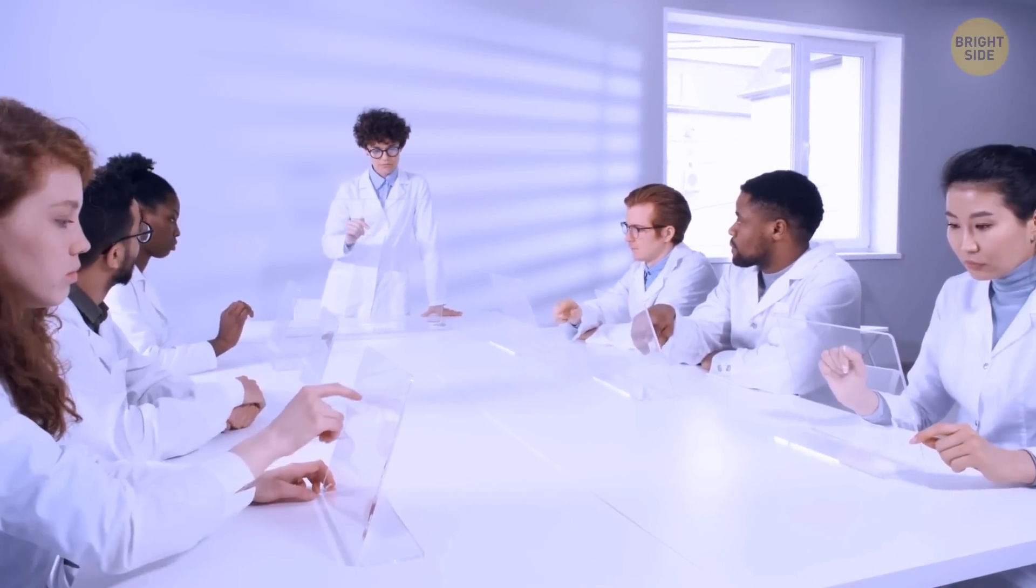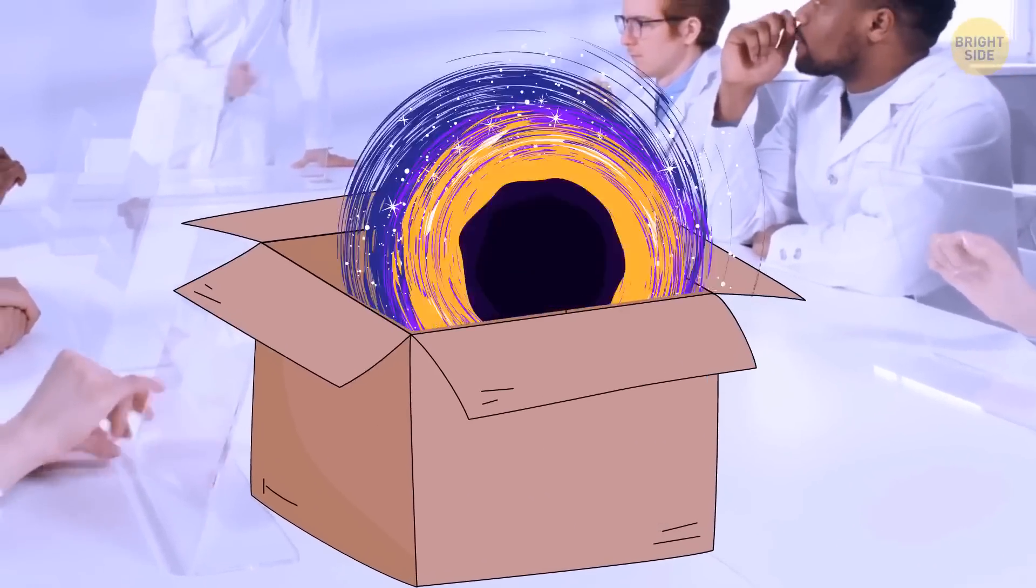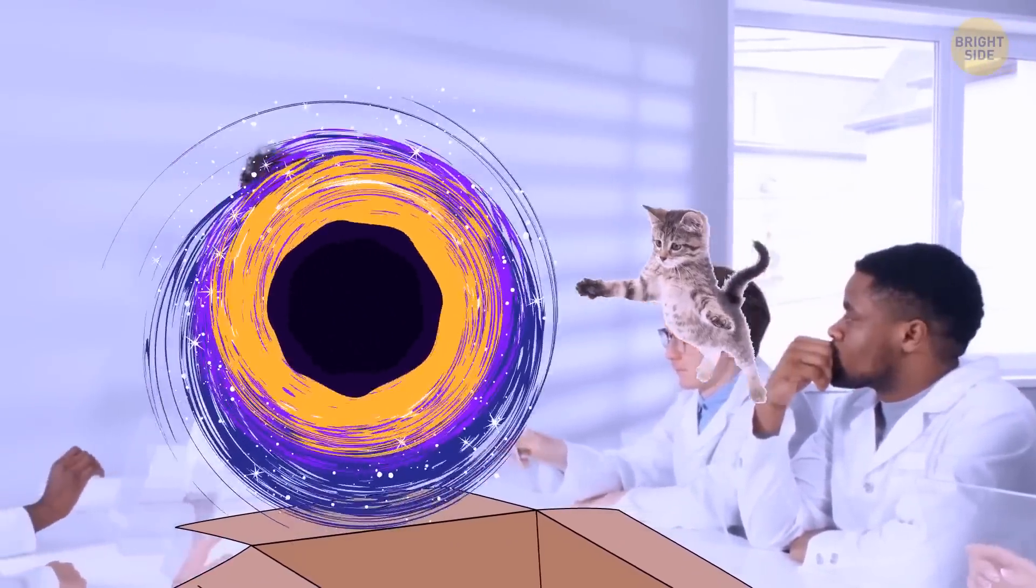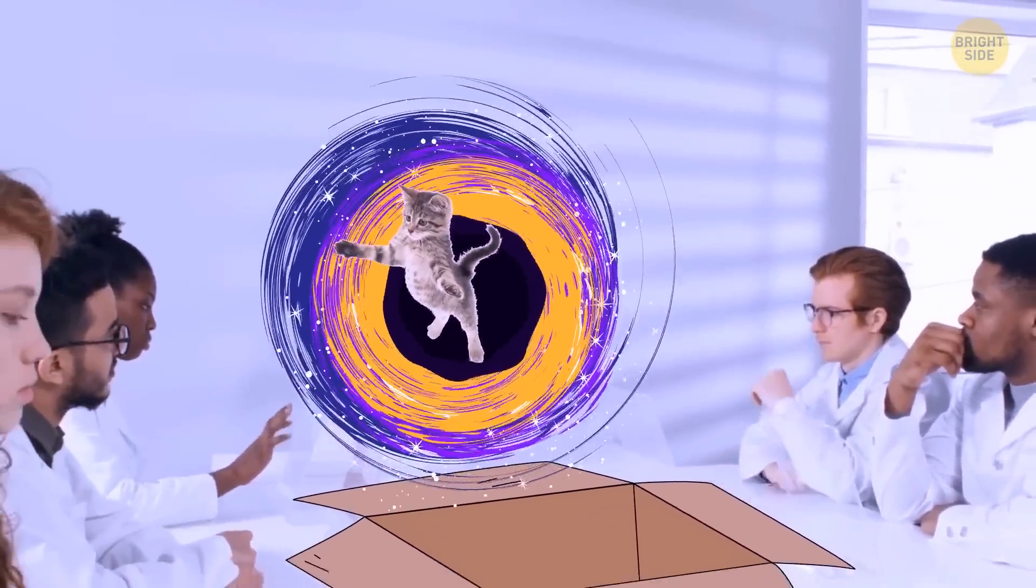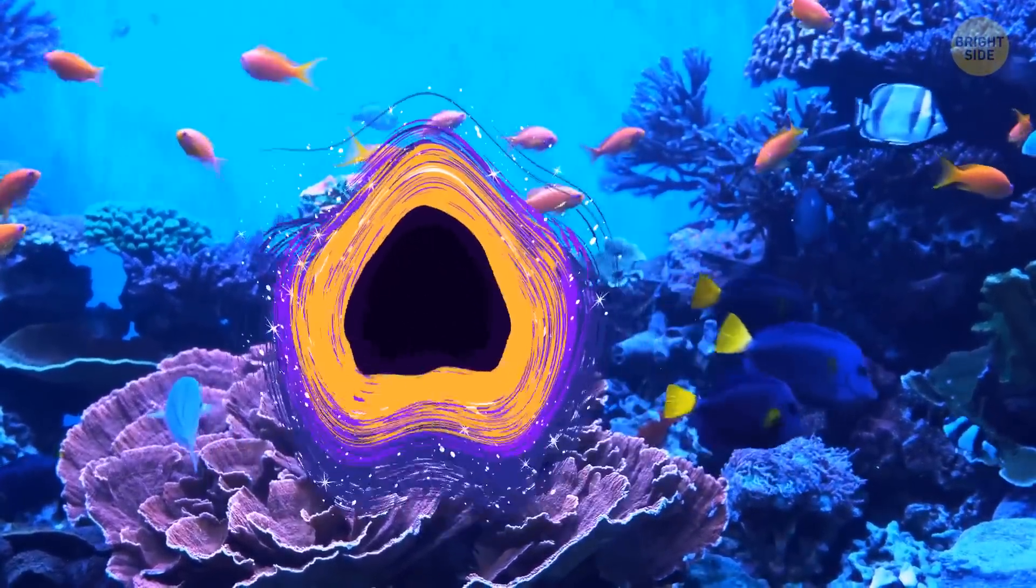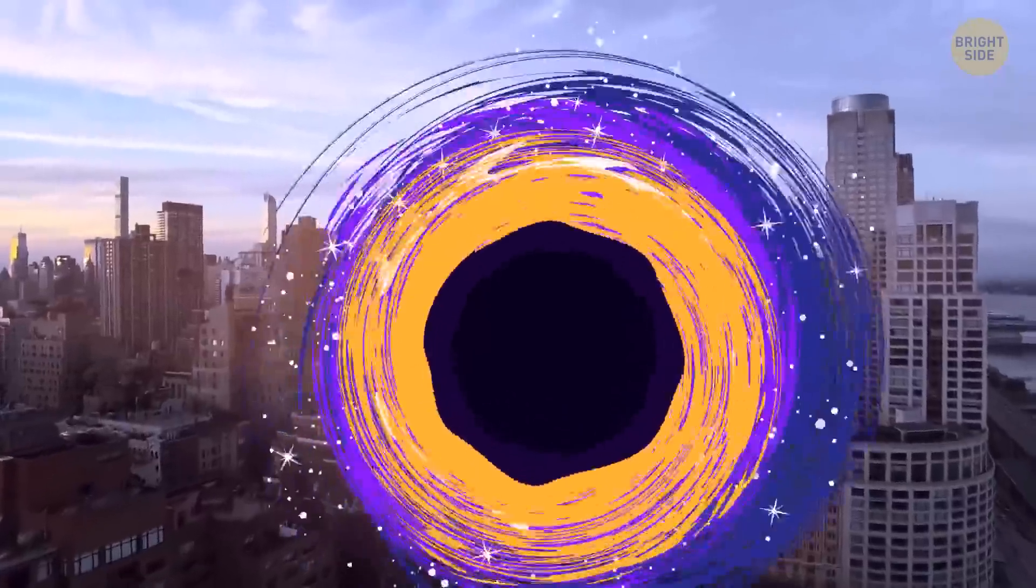Here's something cool that scientists have discovered recently: Schrödinger's black holes. Yep, the scariest objects in our universe turned out to be even more terrifying. Now we know that they can also exist in many states at once. But what does it mean? Let's find out.